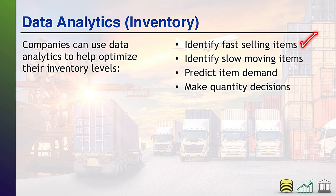First up, identify fast-selling items — these are the things you like, the things that move quickly. Next up, identify slow-moving items. These are things you don't like. They sit on the shelves. They become obsolete. They potentially become extra cost in the form of waste.